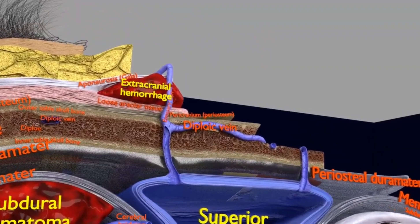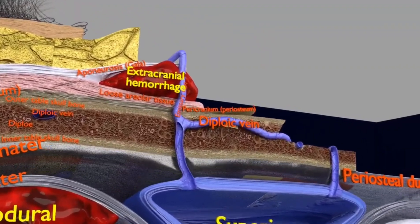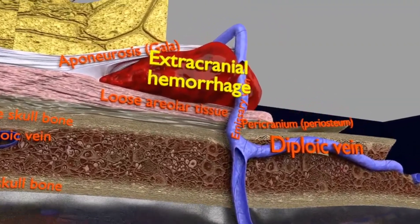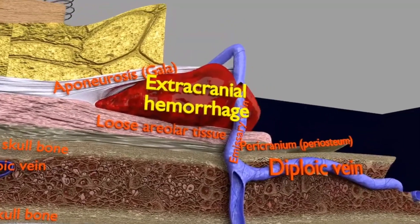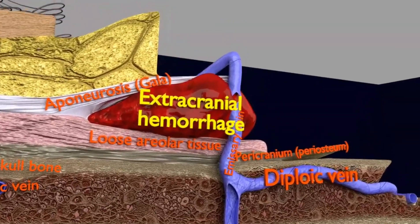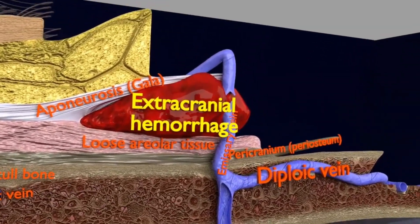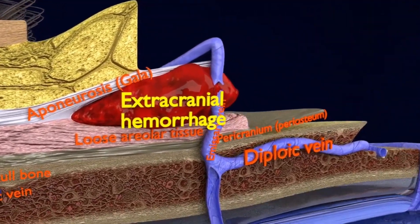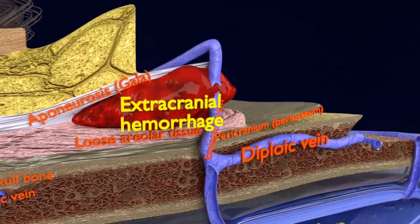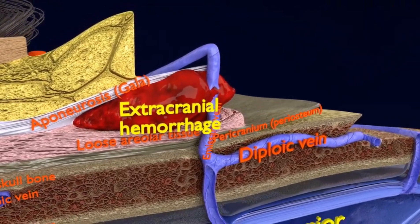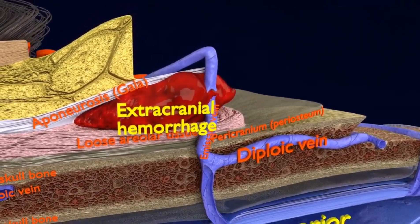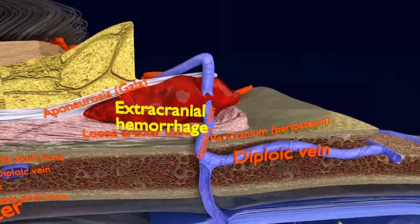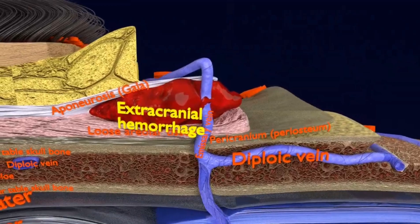Next is the extracranial hemorrhage. It is seen outside the cranial cavity in the scalp due to emissary vein rupture. In this case, you can visualize that clotting has happened between the aponeurosis and the loose areolar tissue.